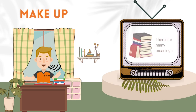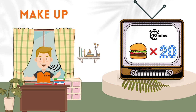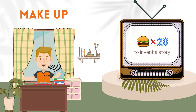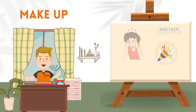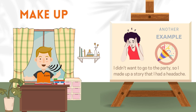Let's continue with the next one: make up. Make up also has a lot of meanings, but we're going to talk about one of them. Imagine your friend says that he ate 20 hamburgers in 10 minutes. What I'm going to say is that I think my friend is not telling the truth — he is making up a story. Make up means to invent a story or plans. Another example: I didn't want to go to the party, so I made up that I had a headache and they believed it. Sometimes you might want to make up stories in order to stay away from an occasion.